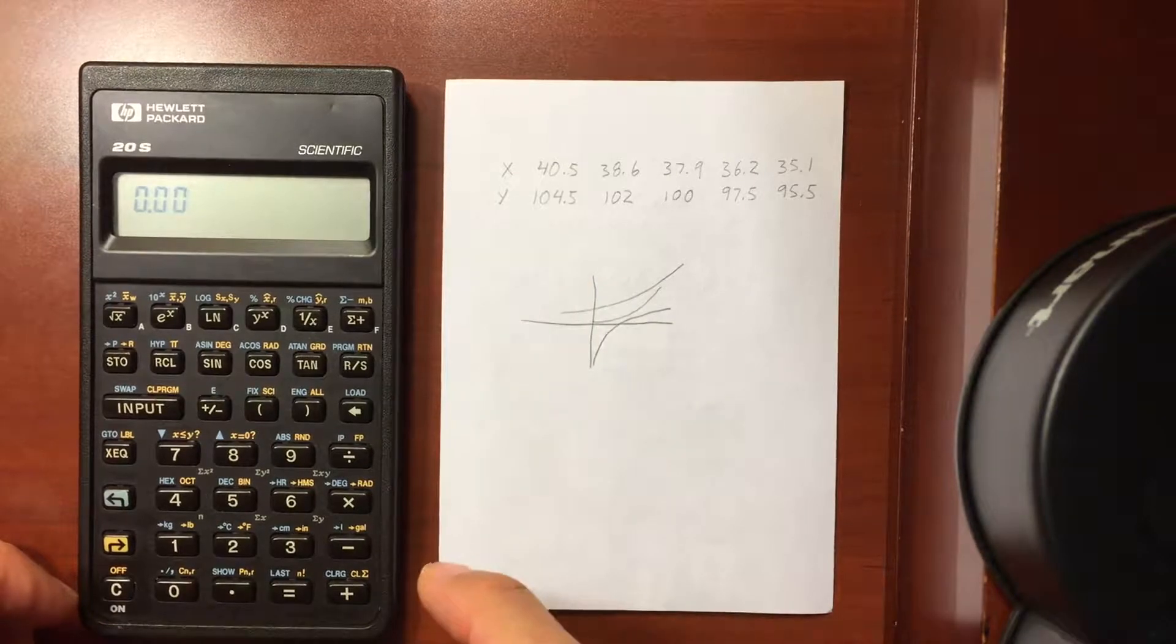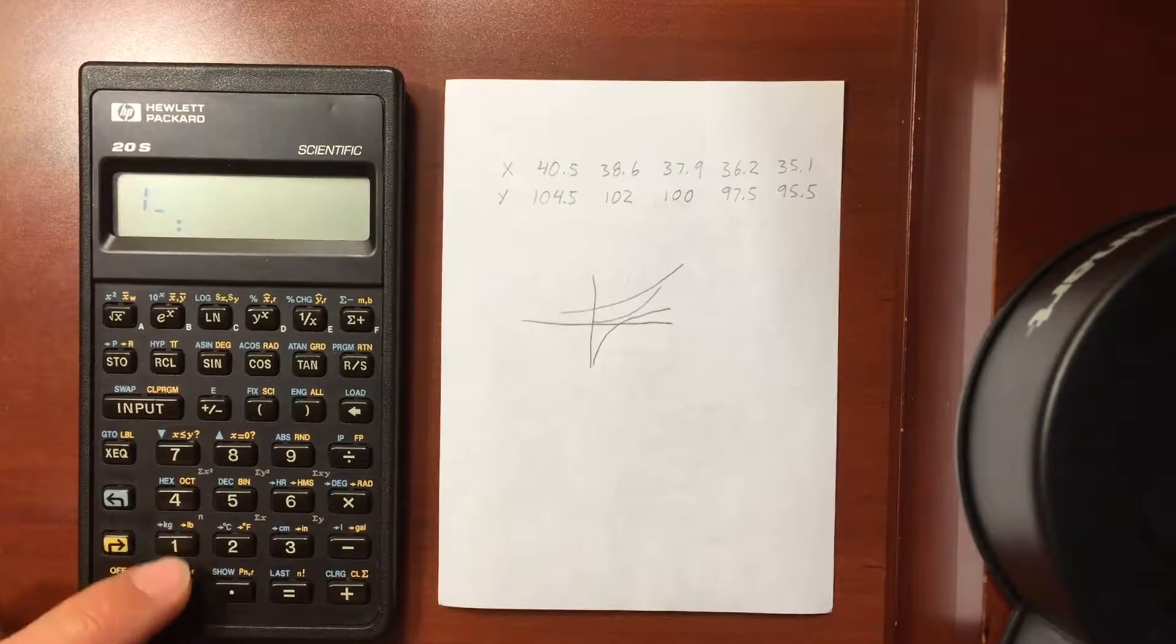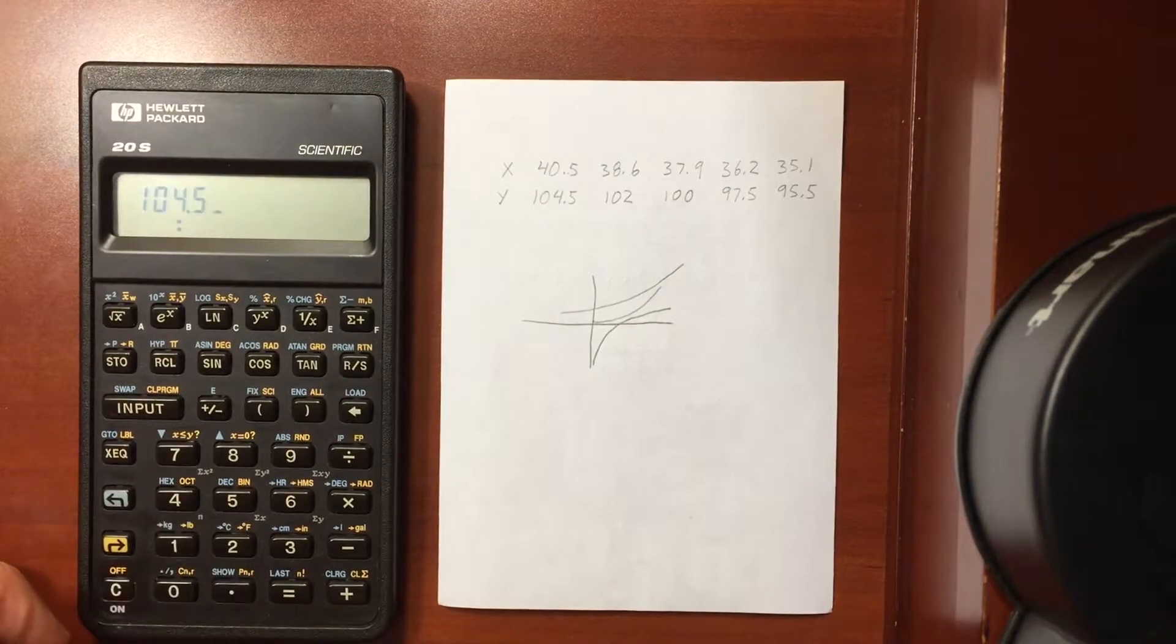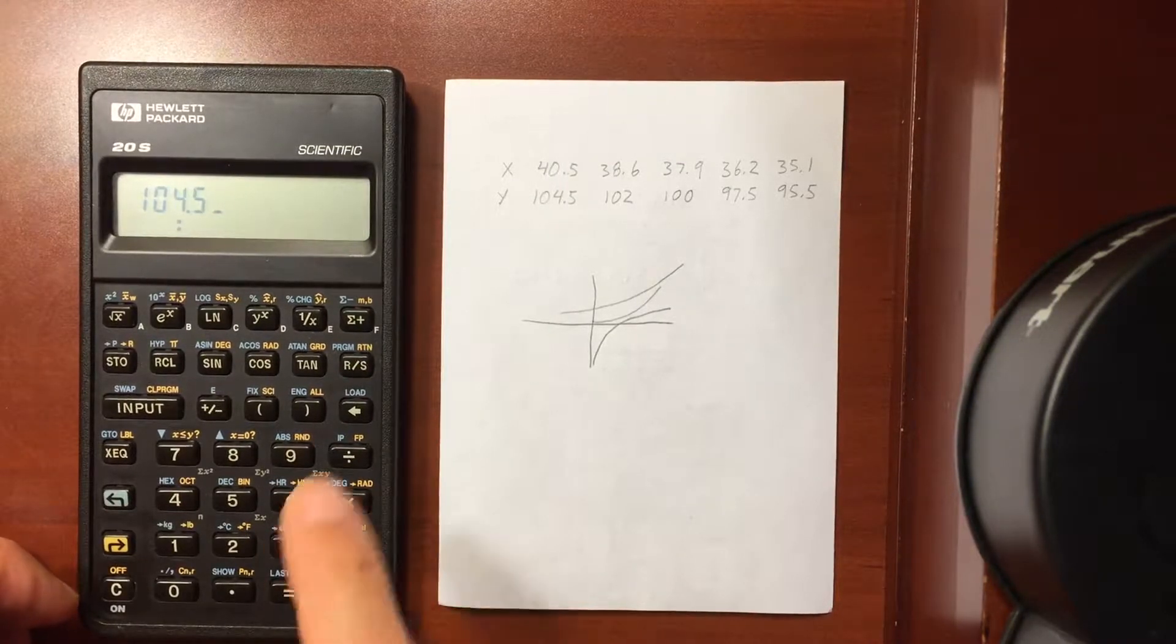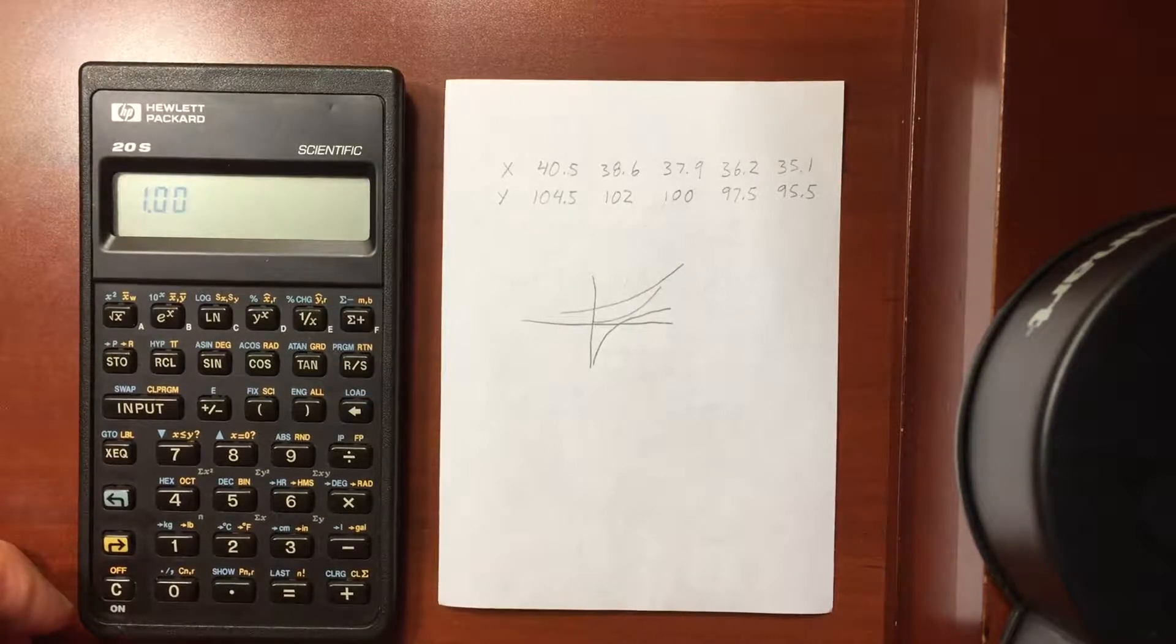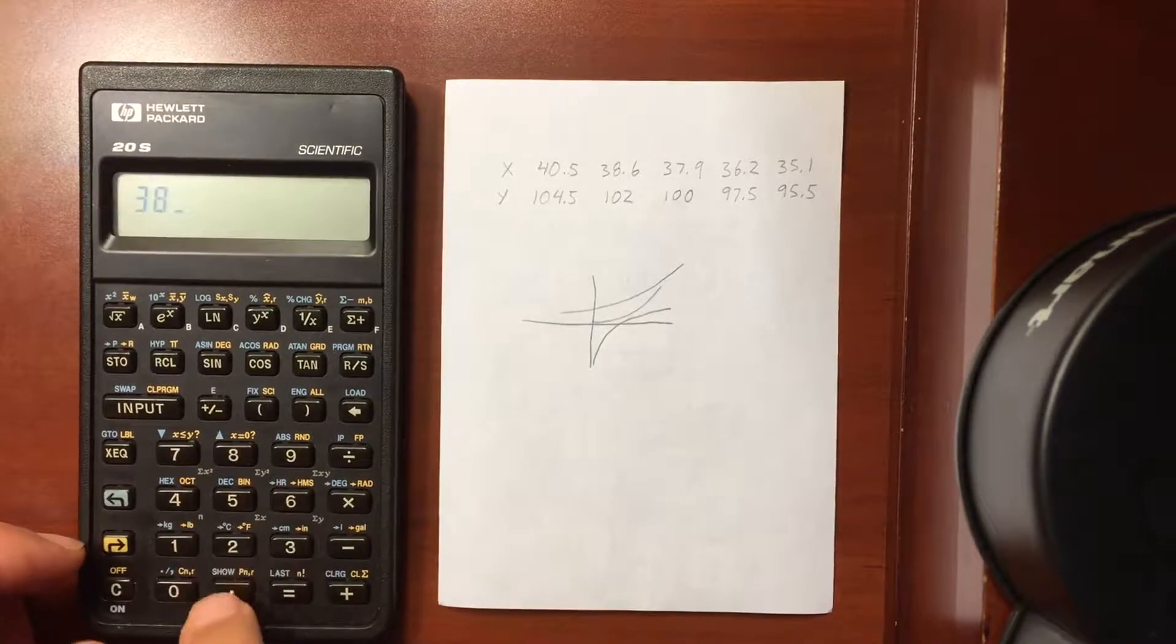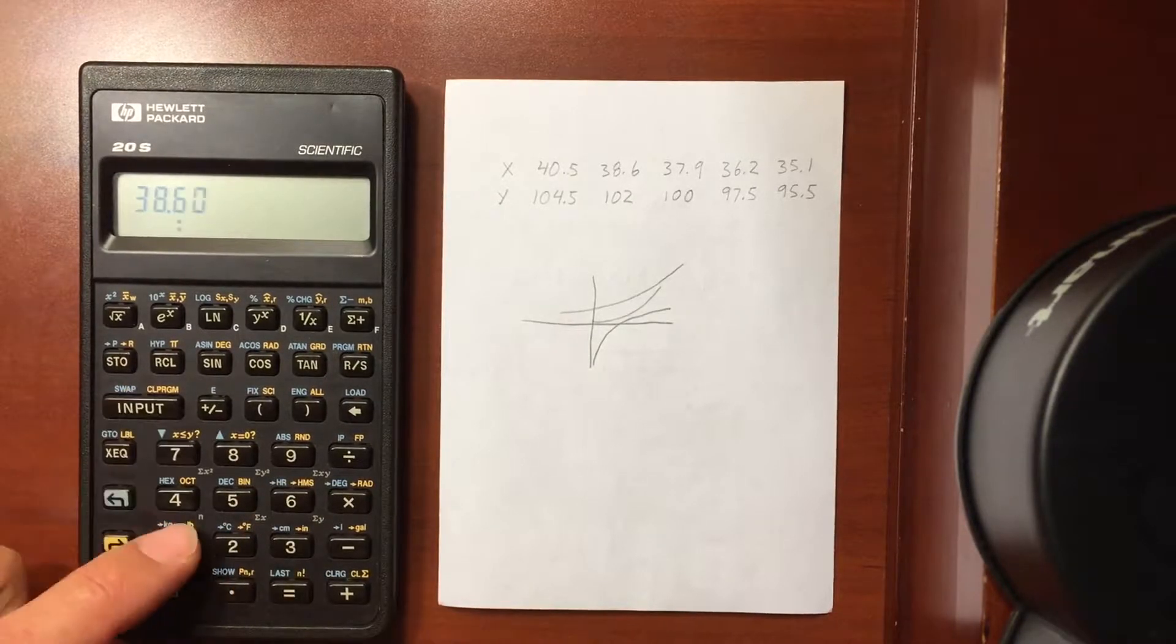Now I enter my X value 40.5, separate it, and 104.5, and then I store it with the summation plus. That just shows me I have one value in my register. Next, 38.6 and 102, store it. I have two values.